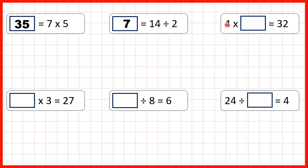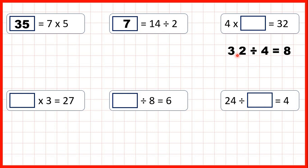Now, 4 times something equals 32. Here we have a missing number multiplication. Whenever we have a missing number in a multiplication problem, we can always divide to find our missing number. So here, we just need to work out 32 divided by 4. That's 8, because 8 times 4 is 32, so our missing number is 8.